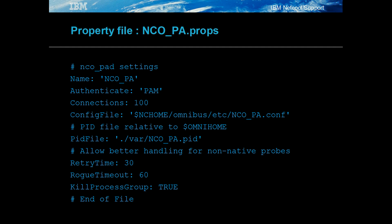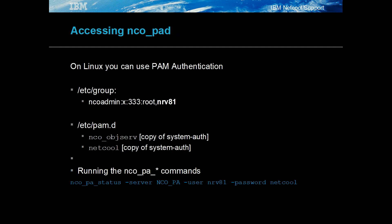Increasing the number of allowed connections to 100 is useful when external actions are being used. In the example configuration, PAM is being used to authenticate users. To allow this, Unix needs to be configured. NCO admin is the default group, so adding the user NRV81 to this group provides the user with access to NCO_PAD.